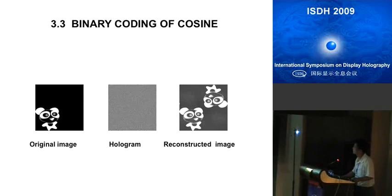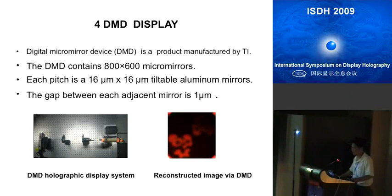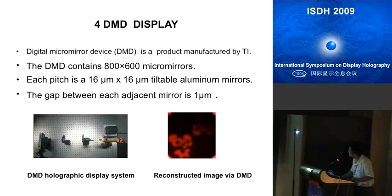Finally, we reconstructed this hologram using a DMD — a digital micromirror device — which is a product manufactured by TI. The DMD we used contains 800 × 600 micromirrors, with each micromirror pitch of 16 micrometers made of aluminum mirrors, and a gap of one micrometer between adjacent mirrors. This is our DMD holographic display system — here is the DMD, here is the laser, the spatial filter, and the reconstructed image via DMD.